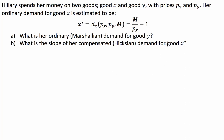G'day guys, we've got a microeconomics question here for you today, specifically consumer choice. We've got a consumer, Hilary, that spends her money on two goods X and Y with prices PX and PY. Her ordinary demand for good X is estimated by this function here. The question is asking us: what is her ordinary demand for good Y?